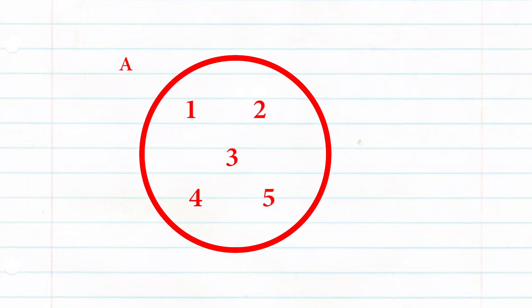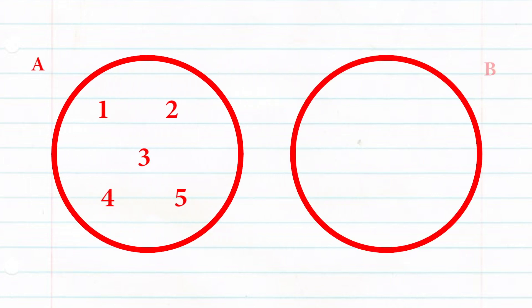Say we have set A, which contains the numerical elements 1, 2, 3, 4, and 5. We also have set B, which contains the numbers 2, 4, 6, 8, and 10.